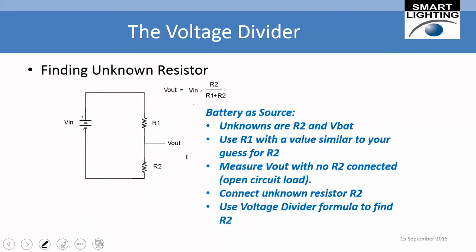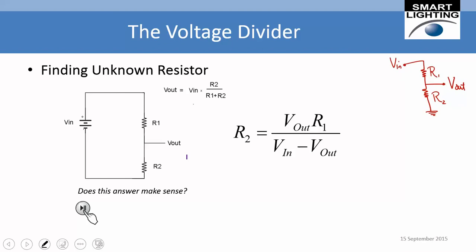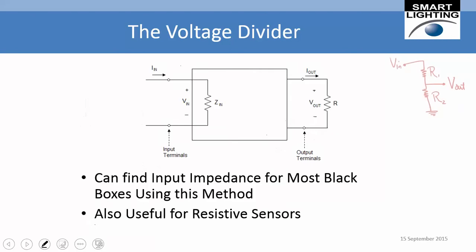Alternatively, using the battery as a source with unknowns R2 and Vbattery, you use R1 with a value similar to your guess for R2 and solve accordingly. It's basically the same equation with things reversed. Consider: if Vout is much smaller than Vin, or almost the same size, what does that imply about R2 relative to R1?